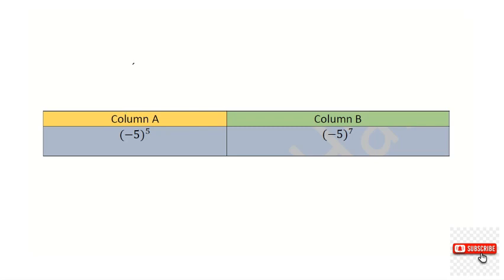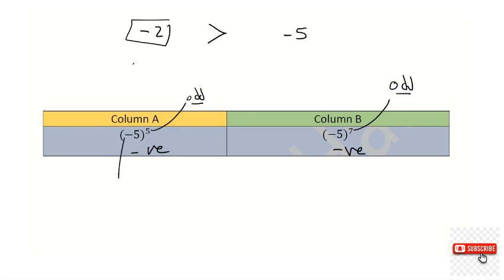Question number one: comparing negative five to the power of five and negative five to the power of seven. When the power is odd, it keeps the negative value. So both will be negative. But notice that when comparing negative numbers, negative two is bigger than negative five. So once you have a larger absolute value with a negative sign, that number is actually smaller. When the number is negative, we take the one with the smaller absolute value as the bigger number.